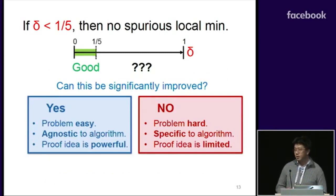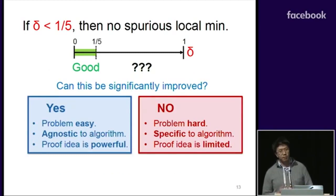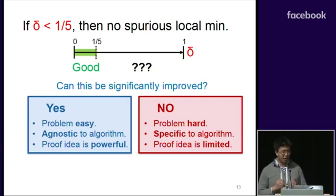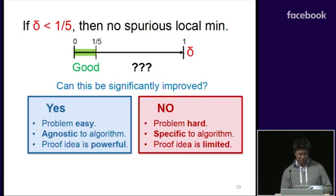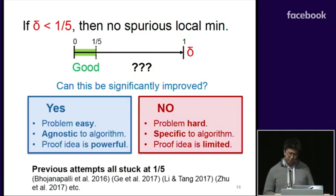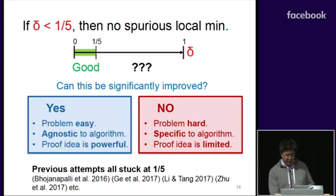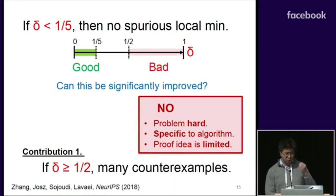This conservatism naturally raises the question: can we do better? What we're really asking is whether the RIP assumption is strong enough to overcome the inherent difficulty, the inherent hardness of this problem. Many previous authors have tried to improve this constant using a variety of different techniques, but in every single case arrive at a similar number. In this paper, we give the first conclusive answer to this question.